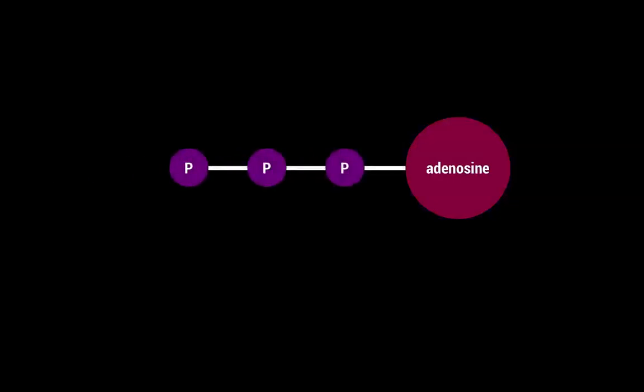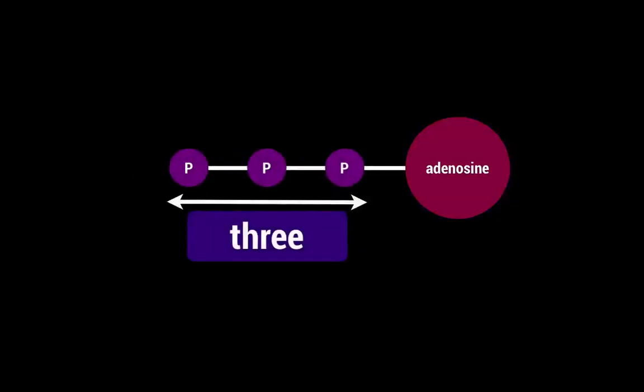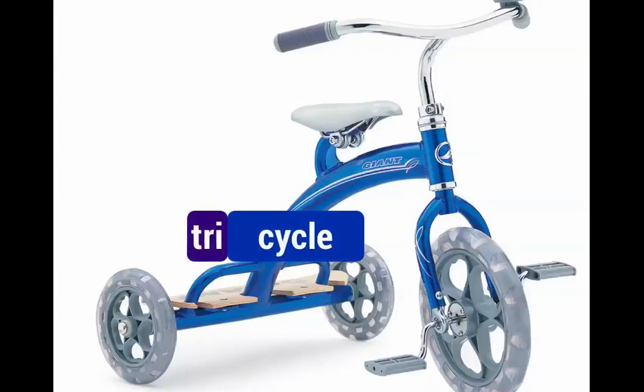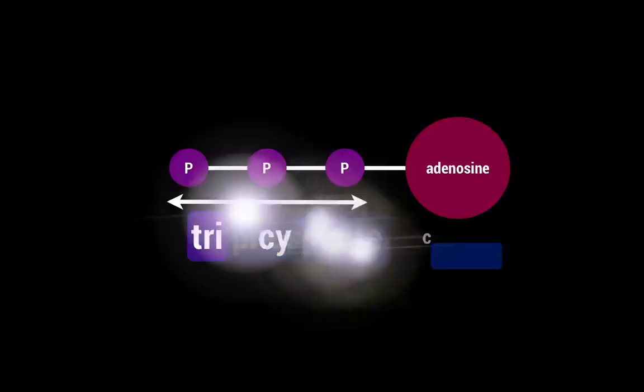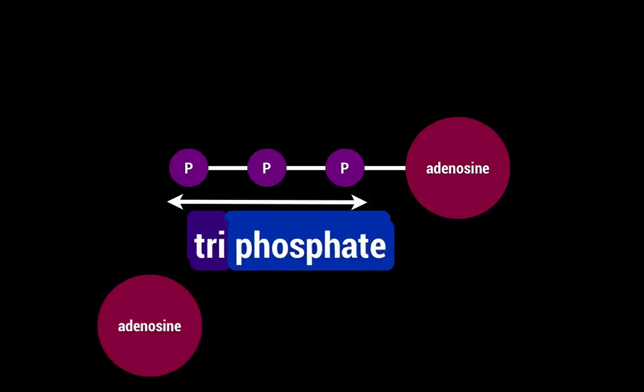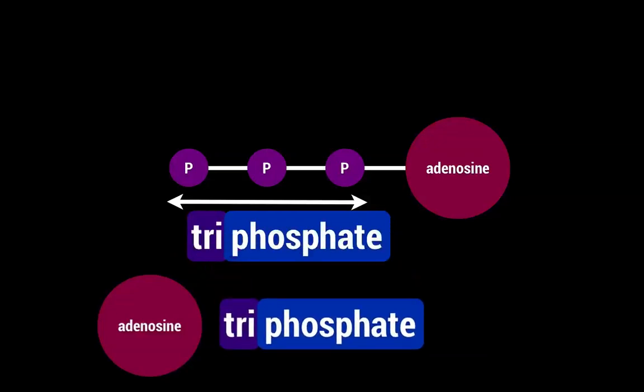ATP has a couple things in it. The first thing it has is adenosine. Adenosine acts as the head of ATP. Attached to it is a three-legged tail, so to speak, of P. There are three P's and the P's stand for phosphates. Just like a tricycle has three wheels, three phosphates are called a triphosphate. So the full name of ATP is adenosine triphosphate, because there are three phosphates attached to an adenosine.